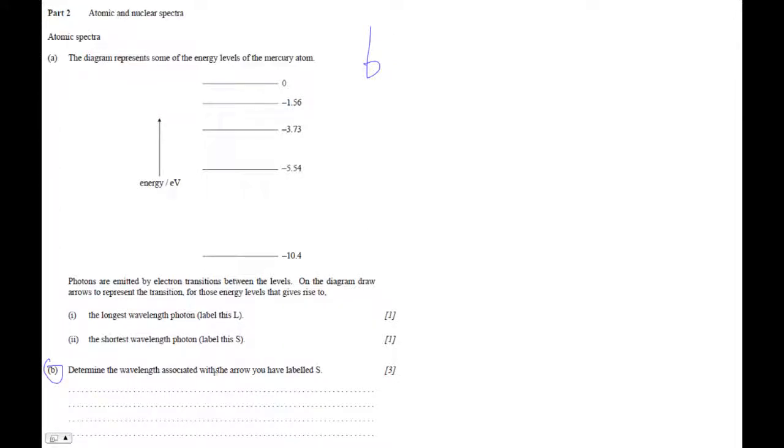Determine the wavelength associated with the arrow you have labeled S. That'll be the shortest wavelength. So let's imagine that you think this is the S. Is this something like that? Figure out what the energy difference is.